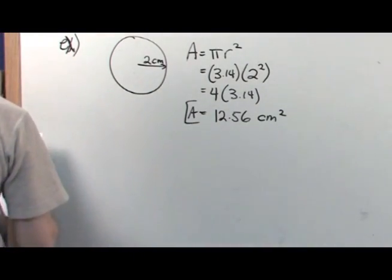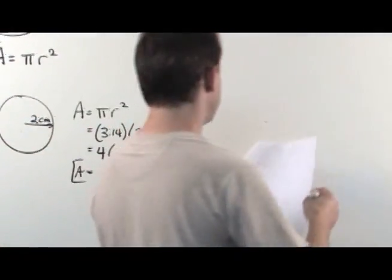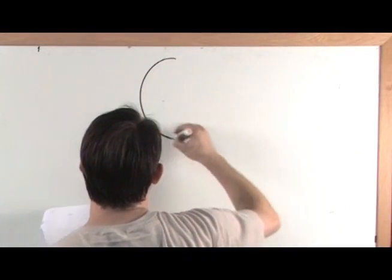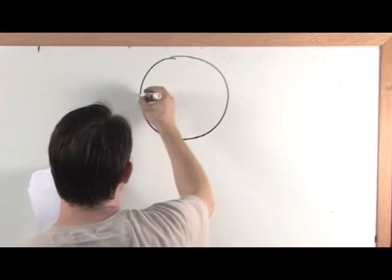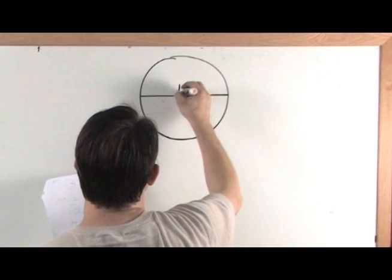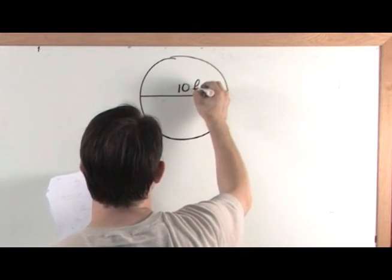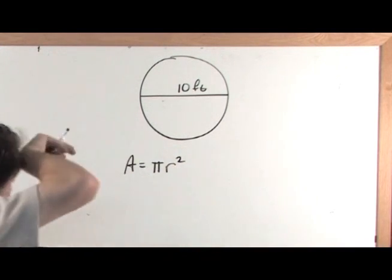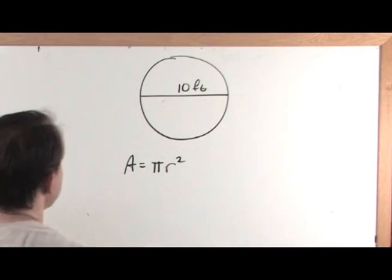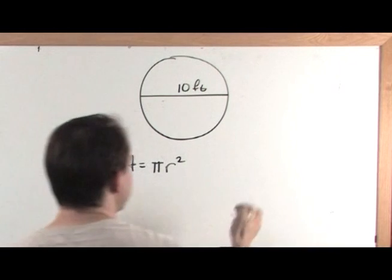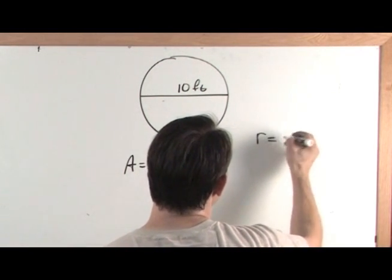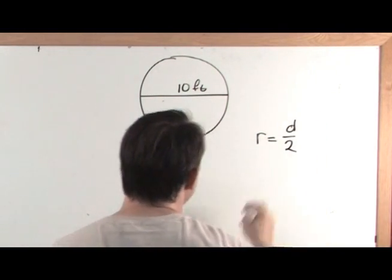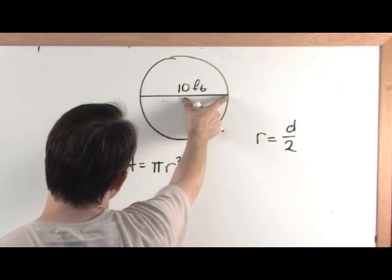And we'll do one final example here, and we'll say we have a circle with a diameter of 10 feet. Well, the area of a circle is pi r squared. But I'm not given a radius here. I'm given the diameter. But we've already said this is super easy to calculate. The radius is just equal to the diameter divided by 2, because the radius goes from the center to the edge.